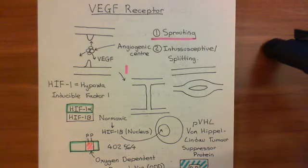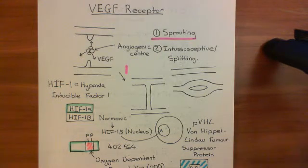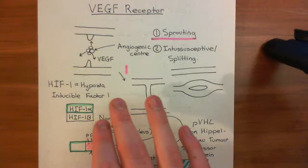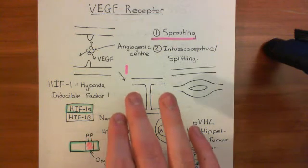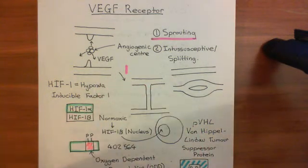These transcription factors will affect gene expression within the cell — they will change gene expression within the cell. And these changes in gene expression are going to bring about the changes that will lead to angiogenesis that is organized by these endothelial cells.